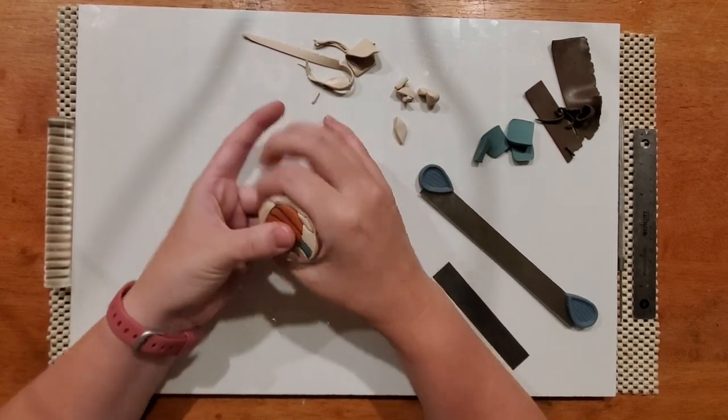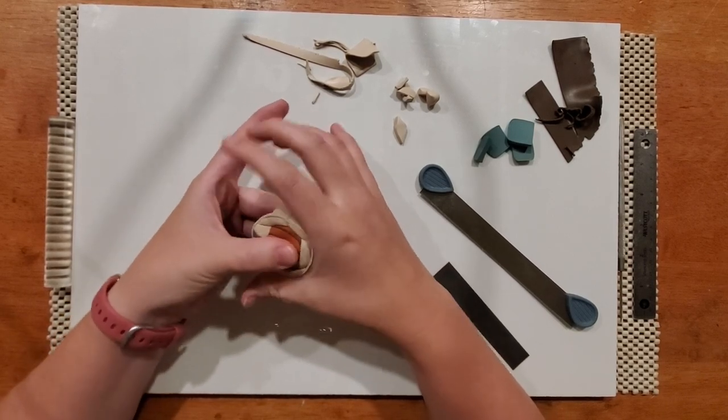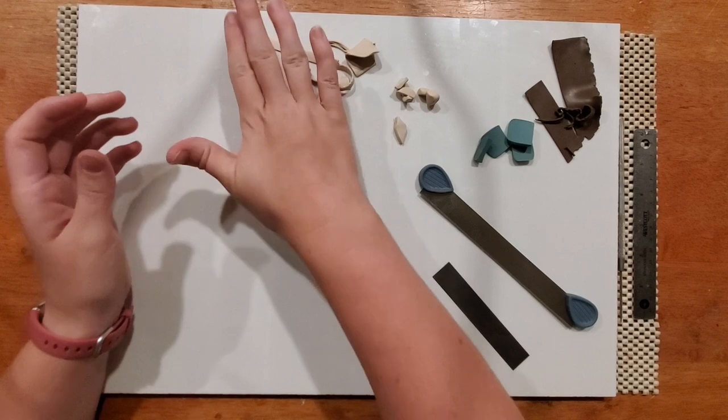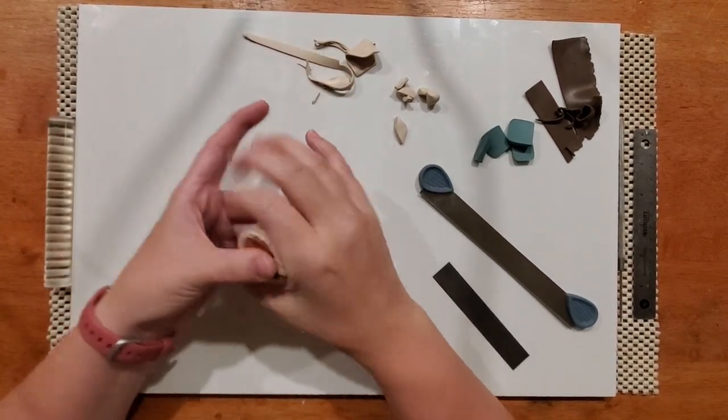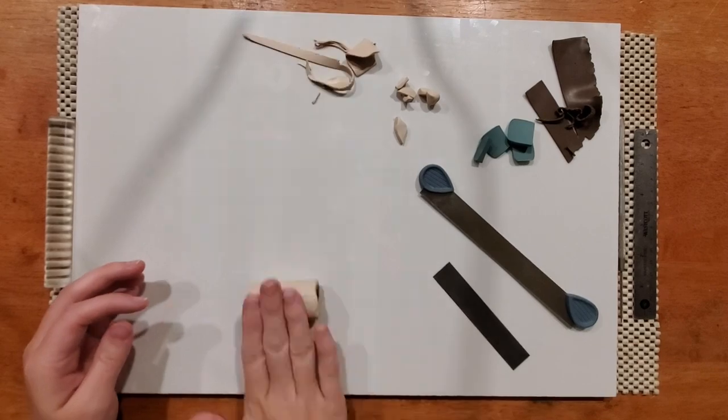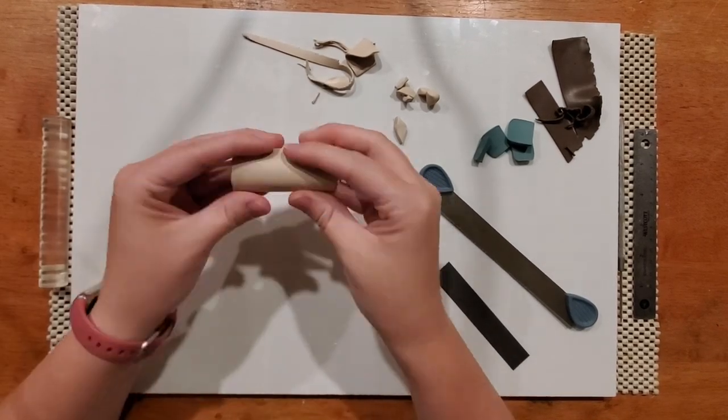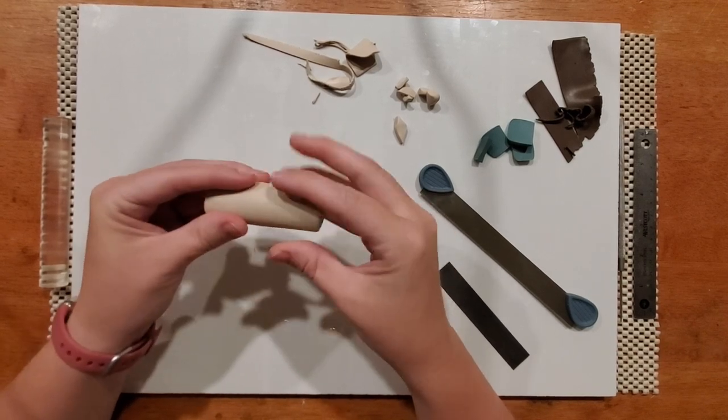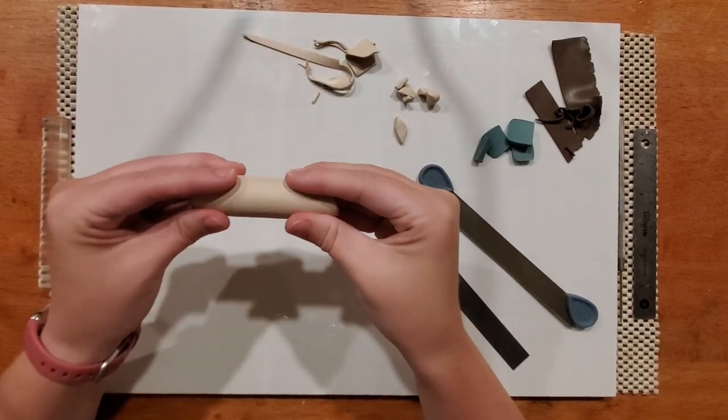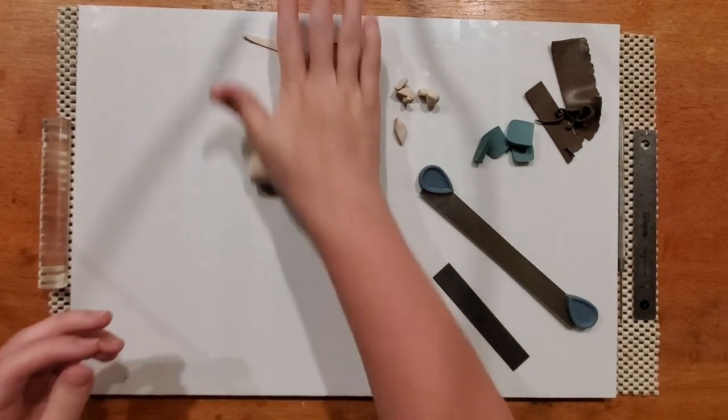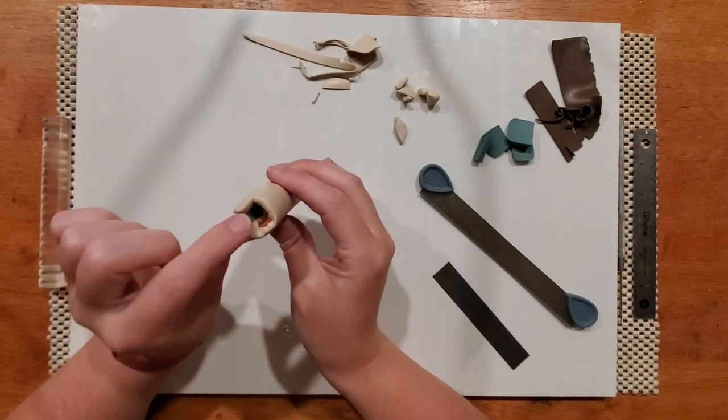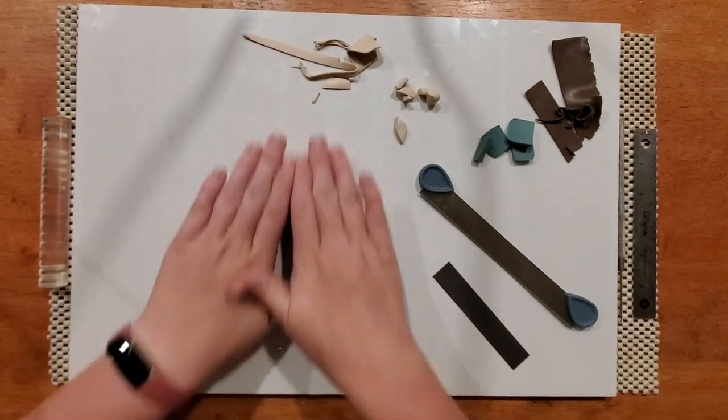So I'll start just by squeezing it gently in the middle and I'll work my way out to the side to get any air bubbles out. Do that on both sides and then I'll give it a little roll and then I'll just keep doing that back and forth. And as it gets longer I might gently stretch it and then just keep rolling it out. And you can see because I started working it right away the ends got pretty mushed in but that's okay, they'll just get cut off.